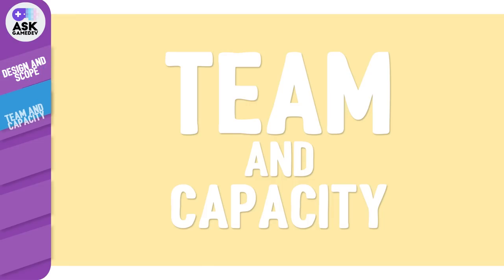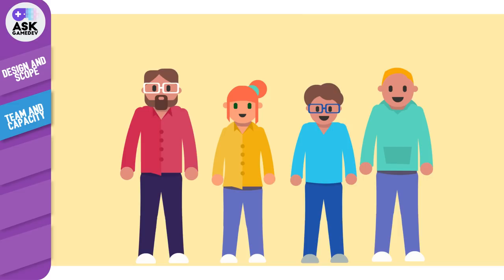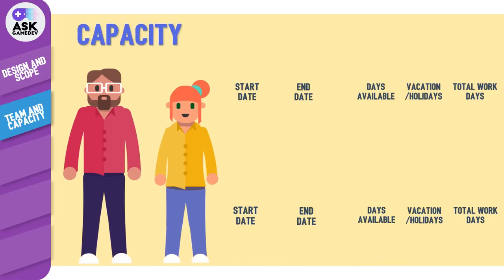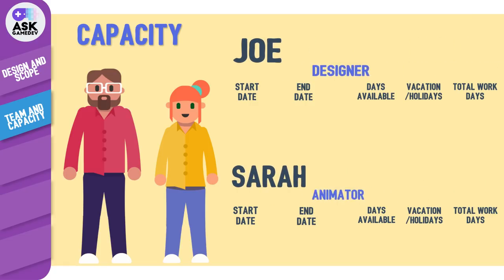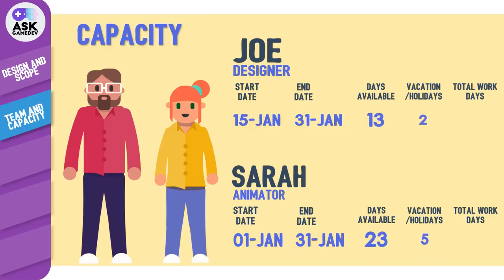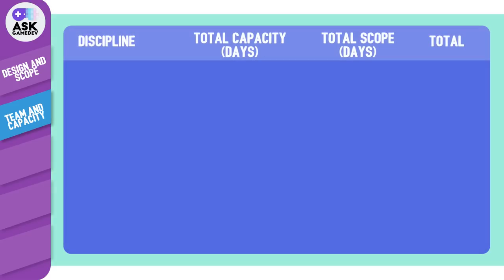Next: team and capacity. Now that you have your scope defined, the next task is to detail your staffing plan to address that work. This involves listing all of your proposed team members, when they can start work on the project, and when the team plans to be at alpha or feature complete. This is your development period. Once you have those start and end dates, you'll want to calculate the amount of work days within that period while accounting for holidays and any non-work days. This is your team capacity.